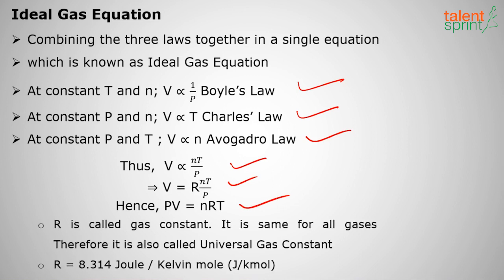R is called the ideal gas constant here. It is the same for all gases, that's why it is called universal gas constant. What is the value of R? 8.314 joules per kelvin mole. Remember this: pV equals nRT, R is called the ideal gas constant, and R equals 8.314 joules per kelvin mole.